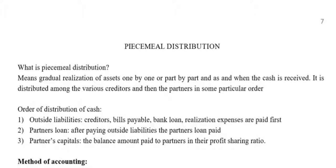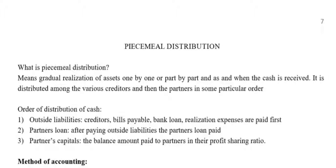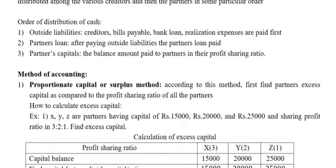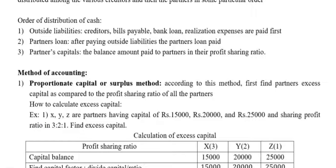From outside liabilities: creditors, bills payable, bank loan, and realization expenses are to be paid first. After paying outside liabilities, the partners' loan needs to be paid. Third, partners' capital — the balance amount is paid to partners in their profit sharing ratio. Methods of accounting: First method — Surplus method, also known as the Proportionate Capital method.